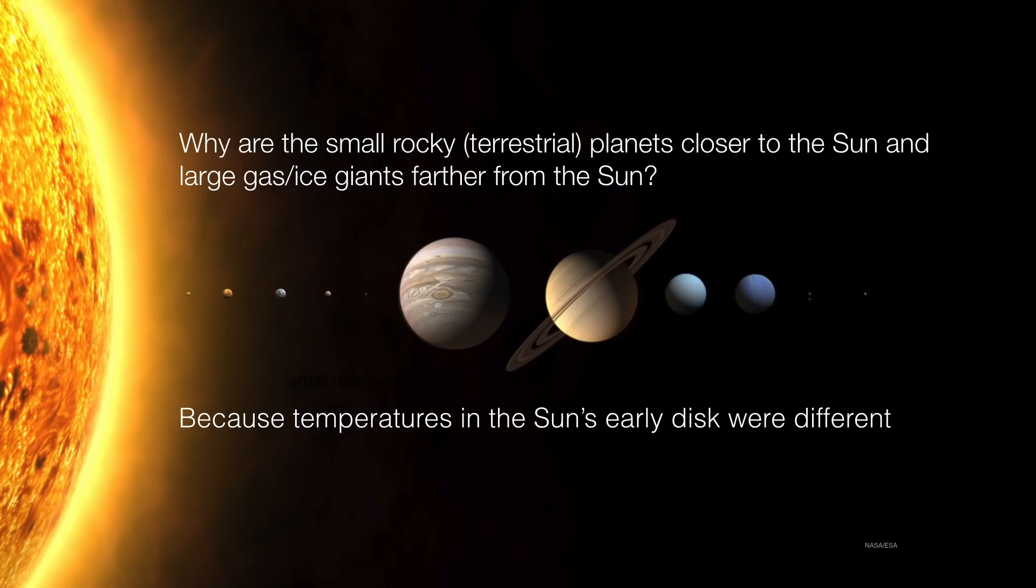So why are the small rocky terrestrial planets closer to the sun and the large gas and ice giants farther from the sun? It's because of that temperature difference. Only in the outer solar system can these large planets form because they have an abundance of both refractory and volatiles. However, inside the solar system where terrestrial planets live, there are only refractory materials to build with.